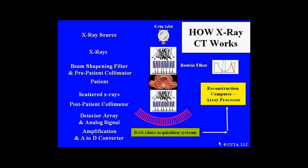This is an overview of the CT scanner. An x-ray source sends out a series of x-rays, which are somewhat scattered and are then collimated and shaped by a pre-patient collimator, usually called a bowtie filter. This reduces overall radiation dose and makes it much more uniform when the x-rays are incident upon the patient.